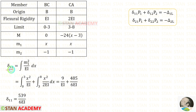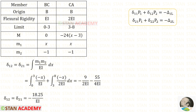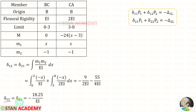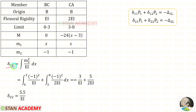Now let us find delta_11. The formula is integration of m1 squared upon EI dx. For BC the limit is 0 to 3, and for CA the limit is 3 to 8; the value of m1 is x for both. After integrating, we get 539 upon 6EI. Now let us find delta_12 and delta_21, which share the same formula. Finally, for delta_22, the formula is integration of m2 squared upon EI dx, giving us 5.5 upon EI.